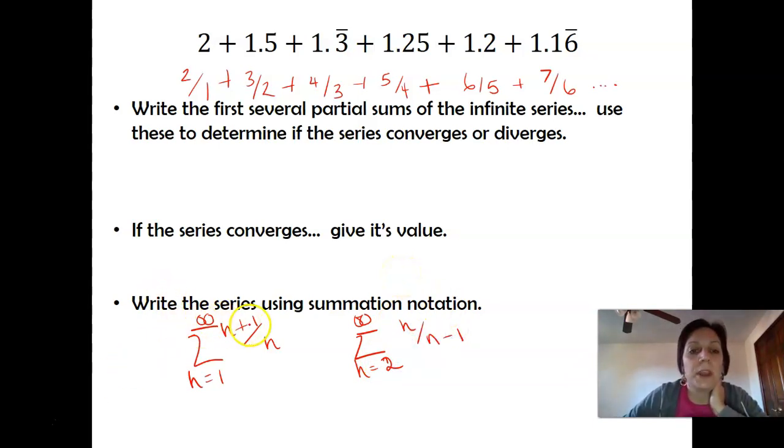You could also be clever and say, you know what, I'm going to start with n equals two. That way, my rule is going to be n and then n minus one. So in this one, I'm looking at it and saying, okay, I have a numerator that is one bigger than the denominator. Over here, it's just looking at it in a different way and saying, I have a denominator that's one fewer than the numerator. The difference in how you write it is that you have to make sure you start at an appropriate place so that you create the same terms. If I put a one into this, I'm going to get a two over one. If I put a two into this, I'm going to get a two over one. So these will both generate the same terms. They just look a little bit different.